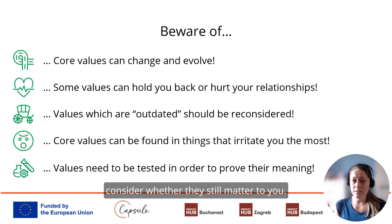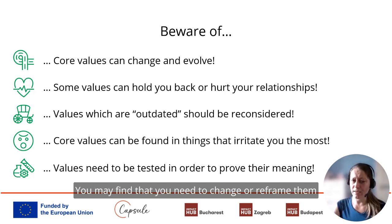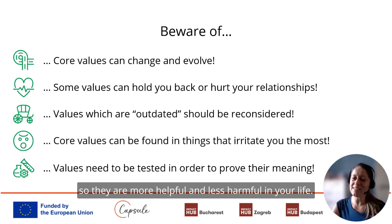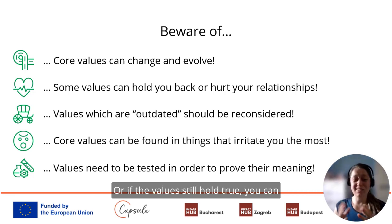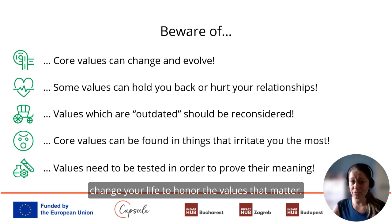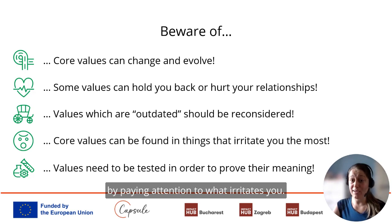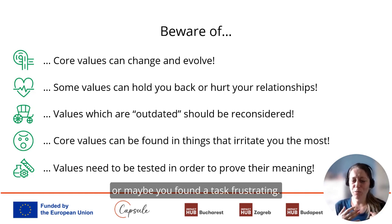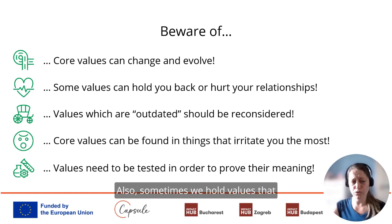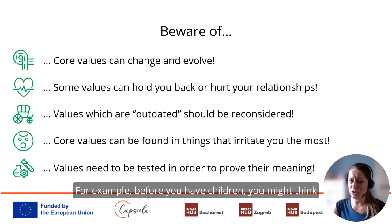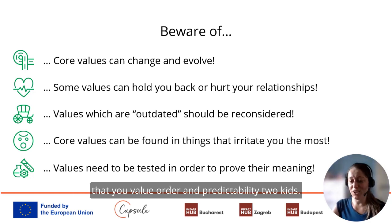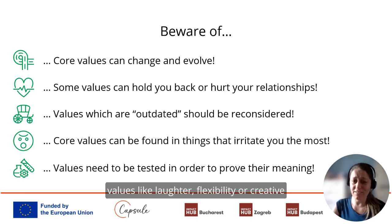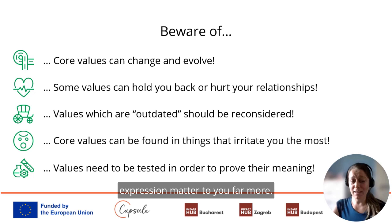Once you're aware of your values, you can consider whether they still matter to you. You may find you need to change or reframe them so they are more helpful and less harmful in your life. Or, if the values still hold true, you can change your life to honor them. You can learn a lot about your values by paying attention to what irritates you — maybe a movie character rubs you the wrong way, someone in your life upsets you, or a task feels frustrating. Your anger might be rooted in a contradiction of your values. Also, sometimes we hold values that seem right but haven't been tested. Before having children you might think you value order and predictability, but two kids later you might realize that laughter, flexibility, or creative expression matter far more.